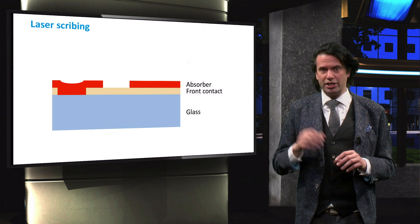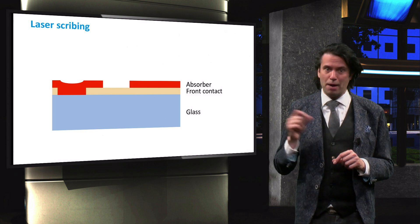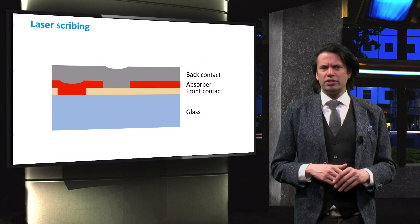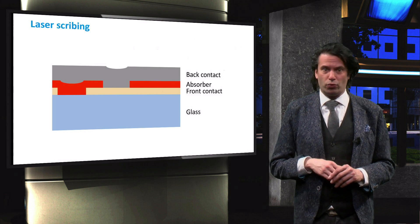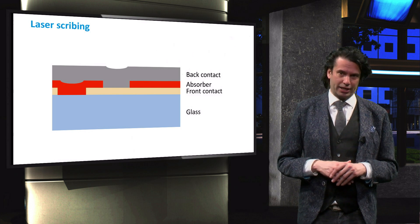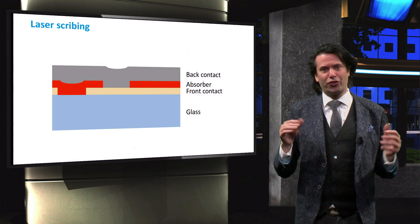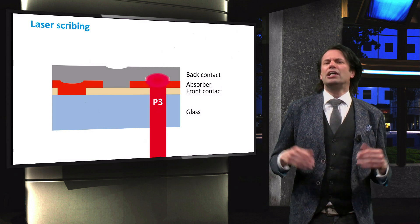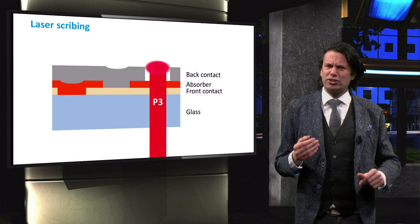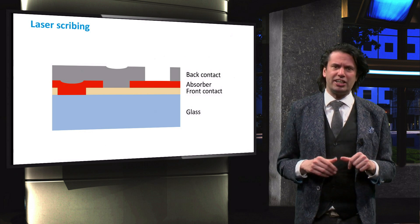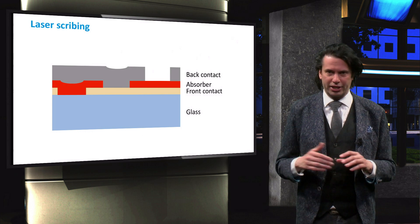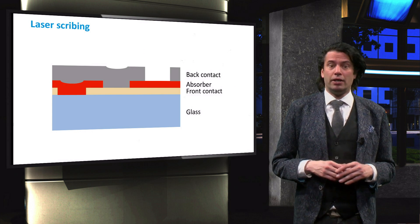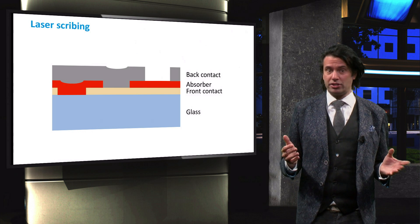The P2 laser scribe leaves a gap in the absorber layer. This gap is filled with the deposition of the final layer, which is the metallic back contact. Then the third laser scribe, called P3, is performed. The wavelength of this laser scribe has to be chosen such that it is transmitted through all of the preceding layers and is only absorbed by the back contact. It may therefore be, for instance, infrared light. The final laser scribe evaporates the metal and creates a gap in the back contact.